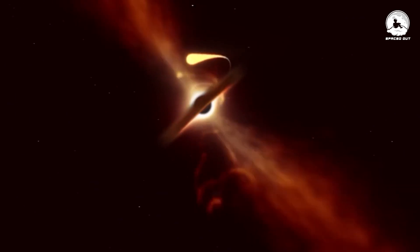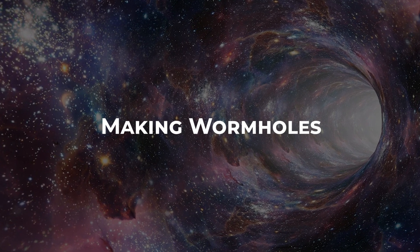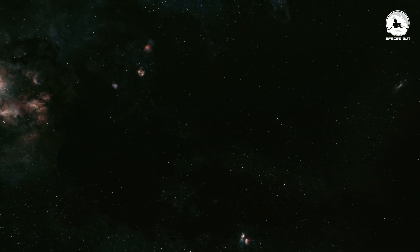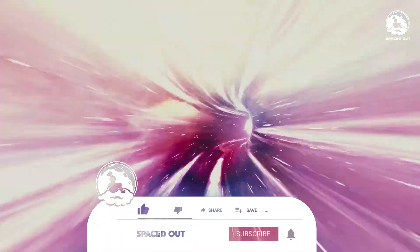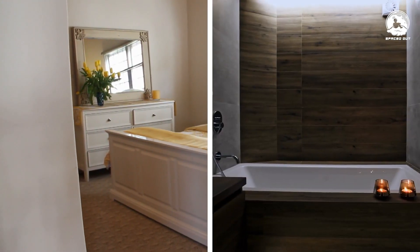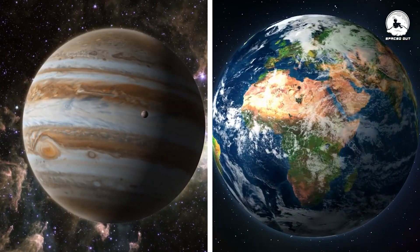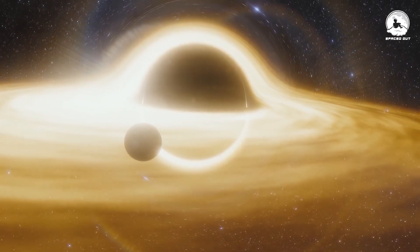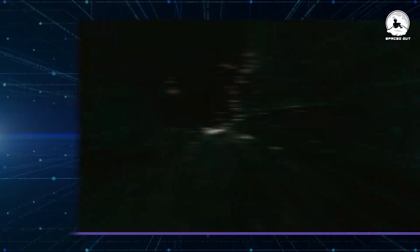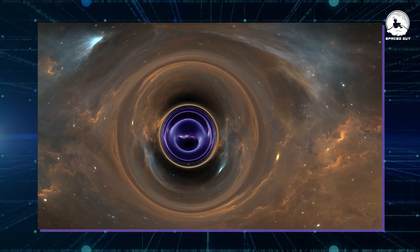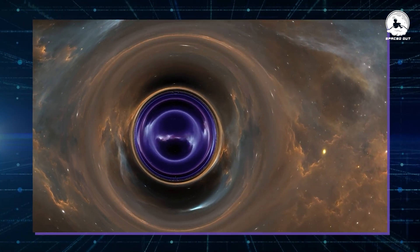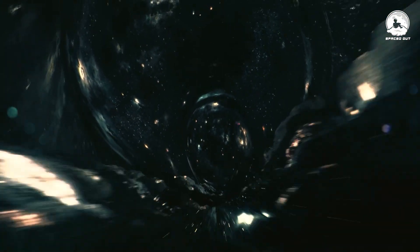But how can we achieve this? For a wormhole to be practical and serve our cosmic travel needs, several essential properties must be present. Firstly, it must establish a connection between distant parts of space-time, much like linking your bedroom to the bathroom or Earth to Jupiter. Secondly, the absence of event horizons is crucial to facilitate two-way travel through the wormhole. Additionally, the wormhole should be of sufficient size to withstand gravitational forces, ensuring the safety of human travelers.